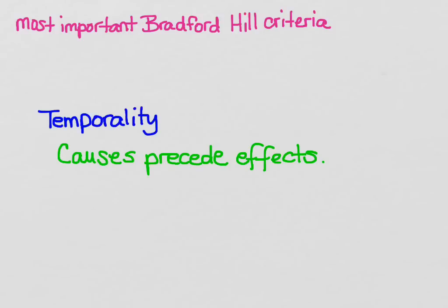This can also sometimes be true of a case control study. When you have your cases, you see how many of those cases have been exposed and compare that to the controls, but you often don't know whether the exposure came before or after the disease. So that's one of the reasons why case control is not as strong evidence for causality as the other study designs.